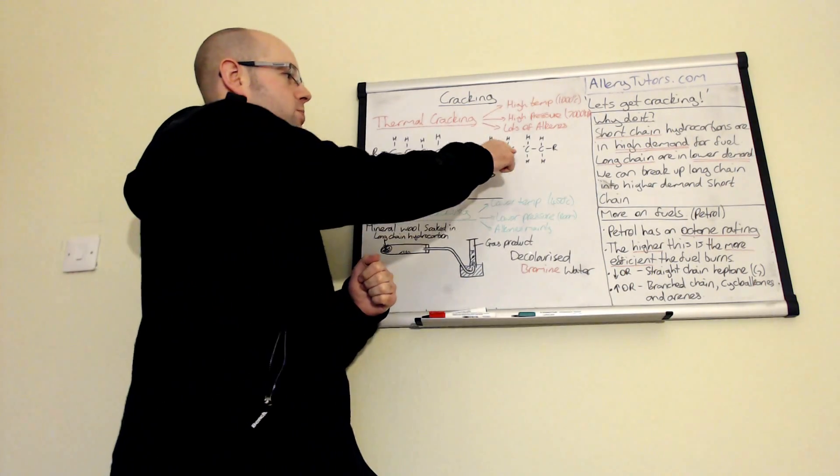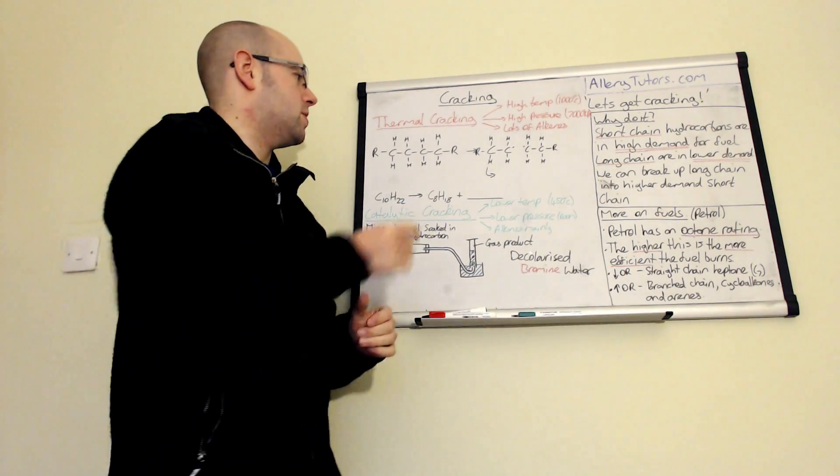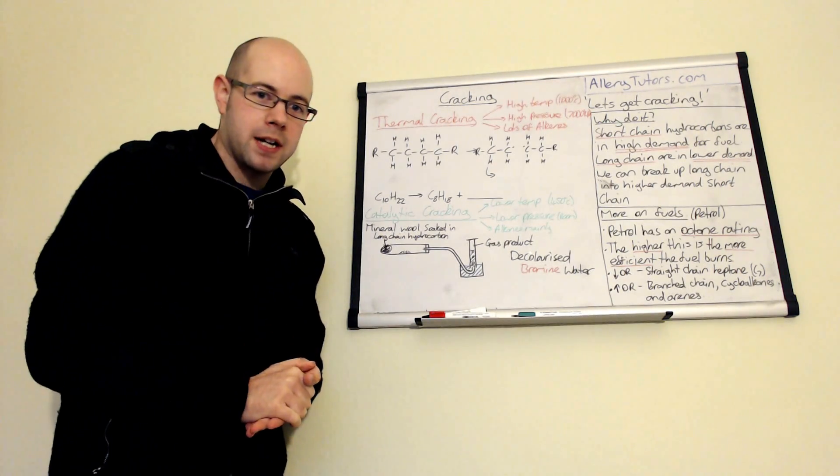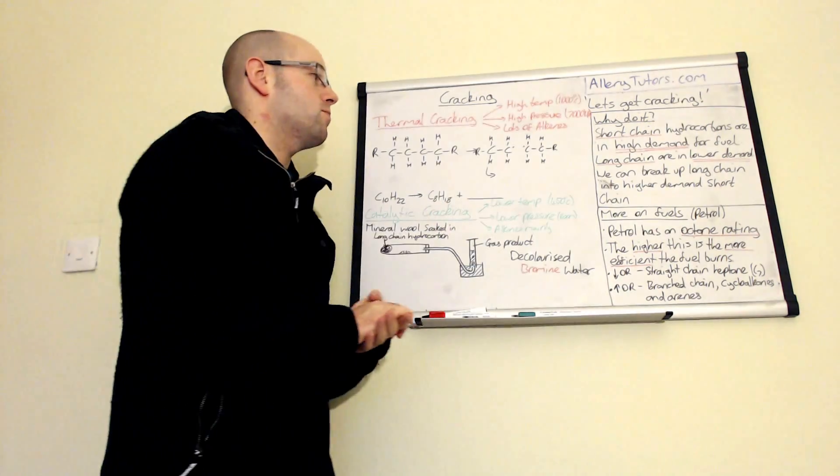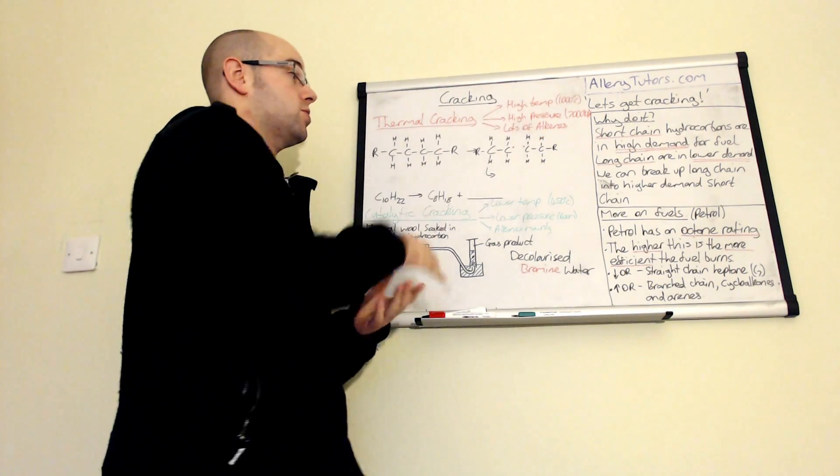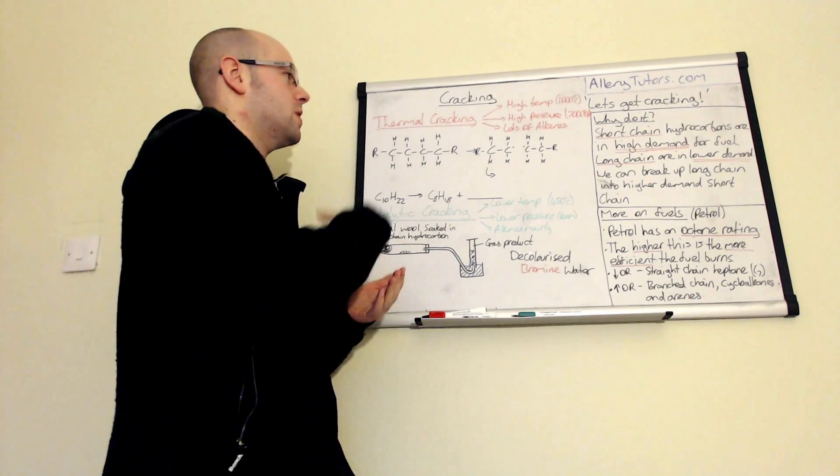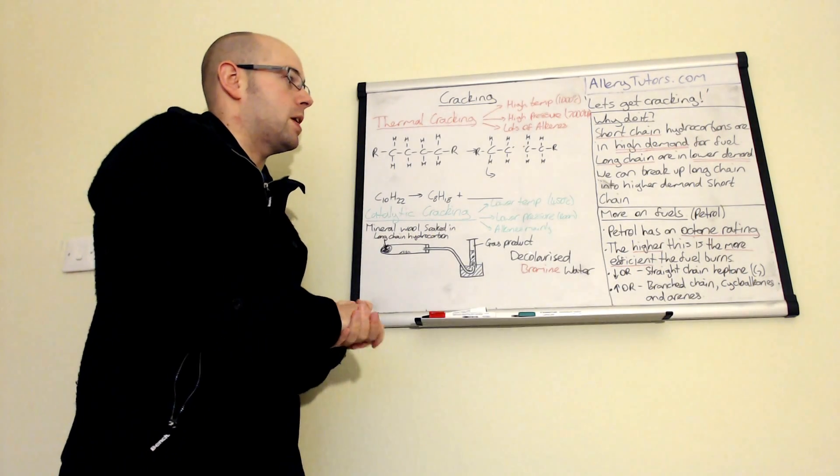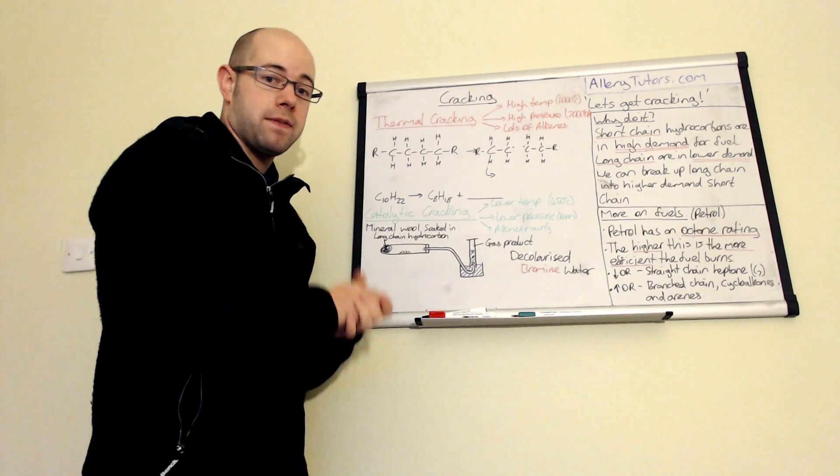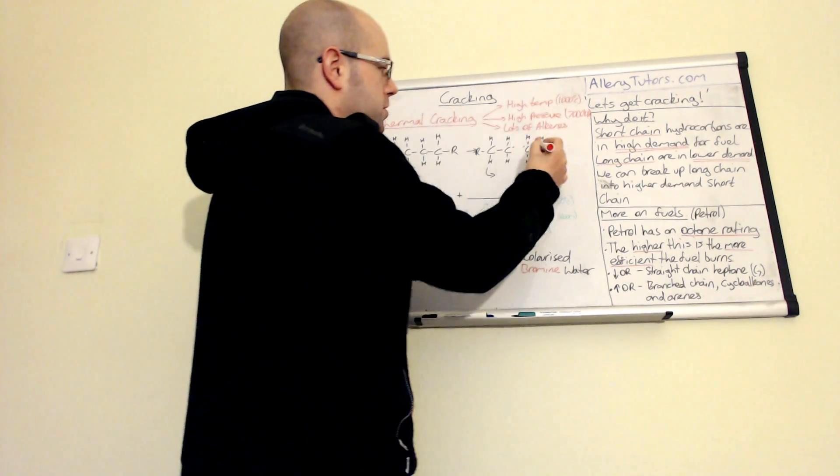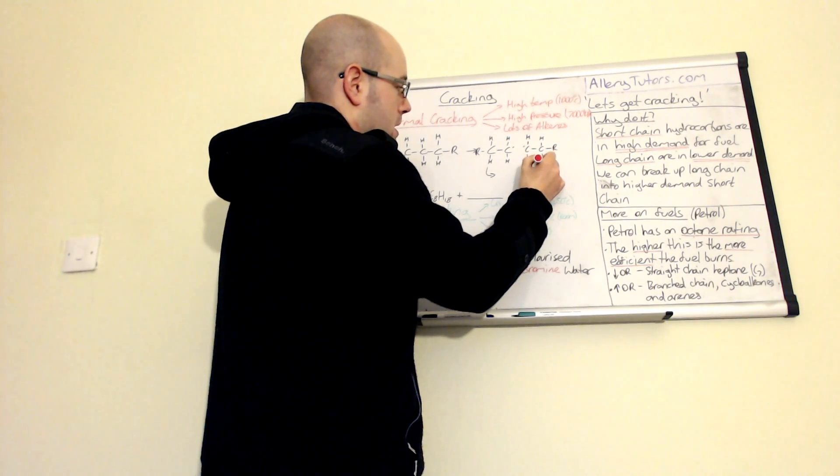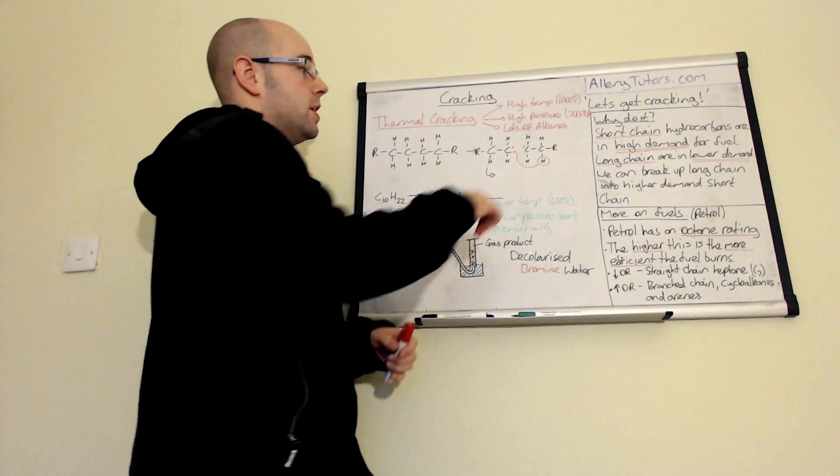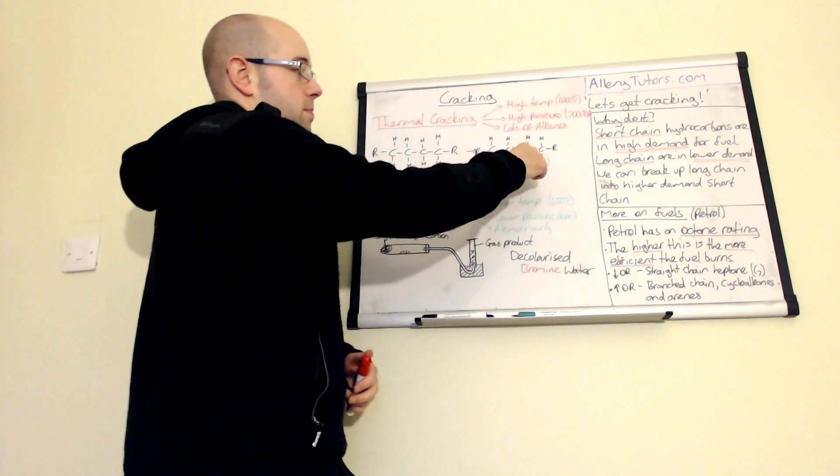When you do thermal cracking, the temperature is so high it allows the chemical bonds between carbons to break. When this happens it forms two what we call free radicals. That means you've got one electron that has gone onto this carbon and one electron that's gone onto that carbon, forming two incredibly reactive radicals. One of the hydrogens will join onto the other carbon to stabilize the molecule.